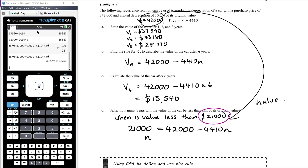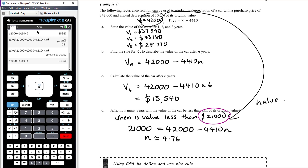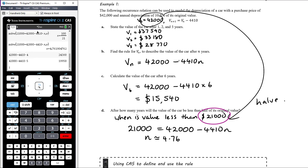Since n ≈ 4.76, we must round up — even if the decimal were small like 4.12, we'd still round up, because rounding down to 4 years still gives a value above $21,000. After 5 years, the value first falls below $21,000. Therefore, it takes 5 years for the car's value to first be less than half its original value.